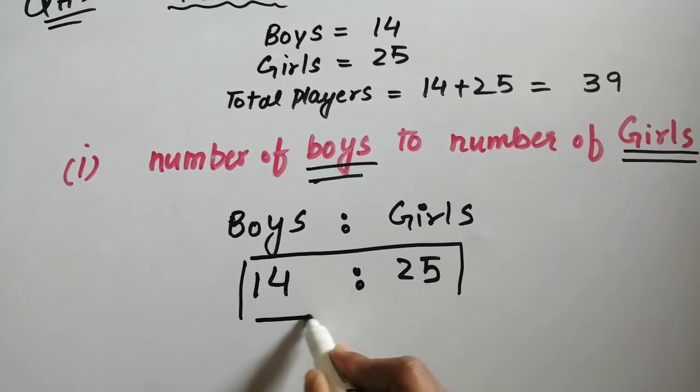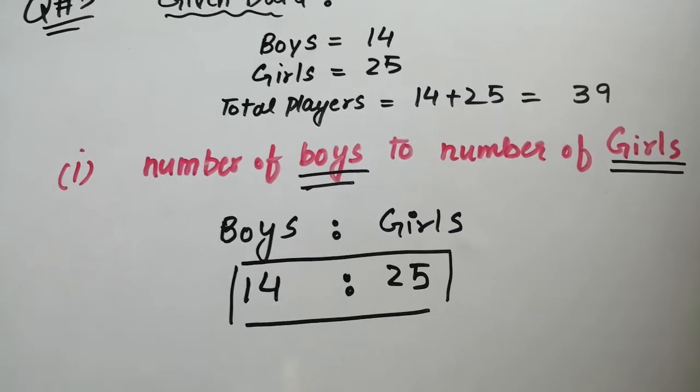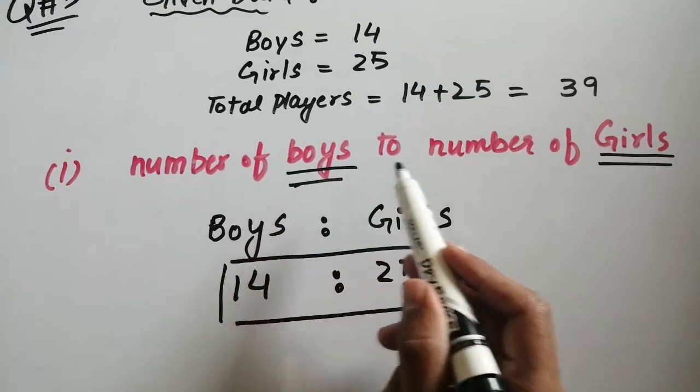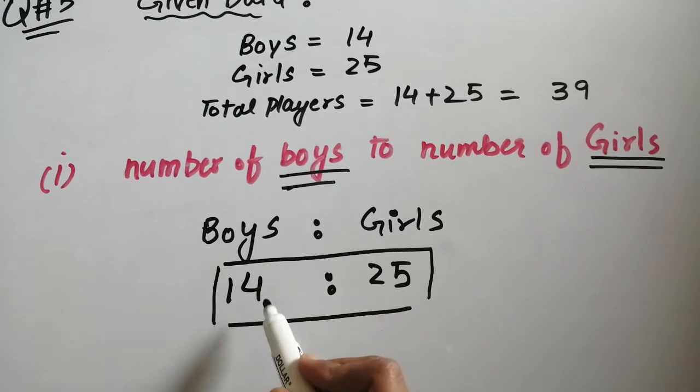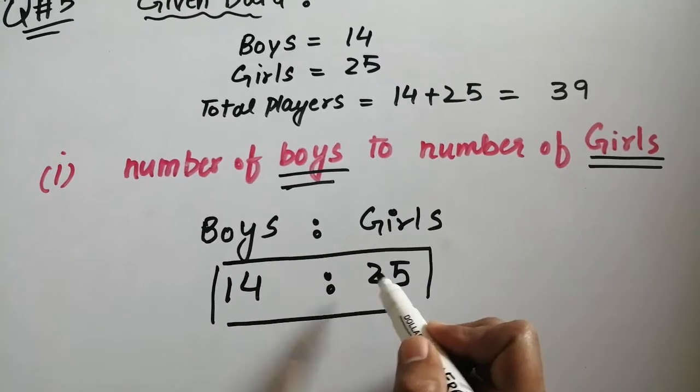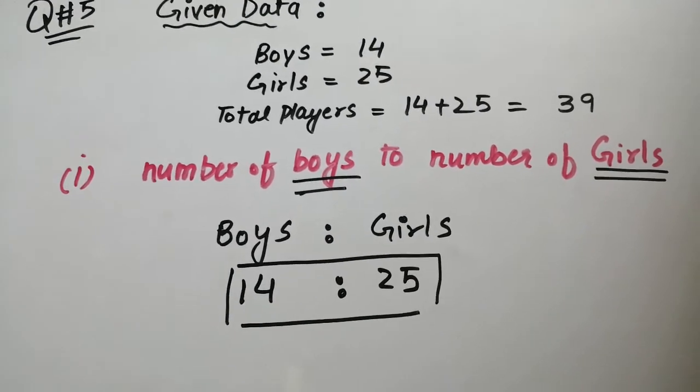The first part is solved very quickly. That is 14 ratio 25. Boys ratio is 14, girls ratio 25, just put it. So this is your ratio: 14 ratio 25 is the answer.